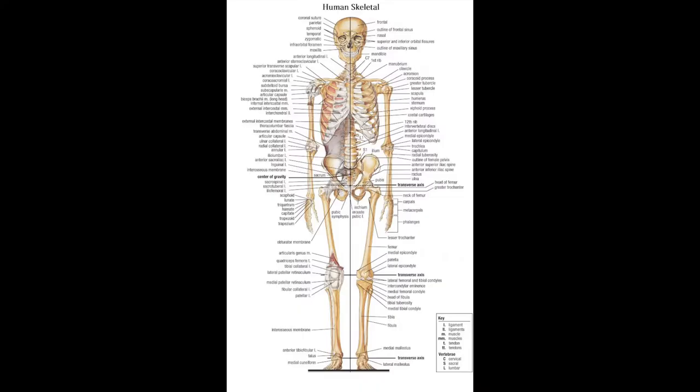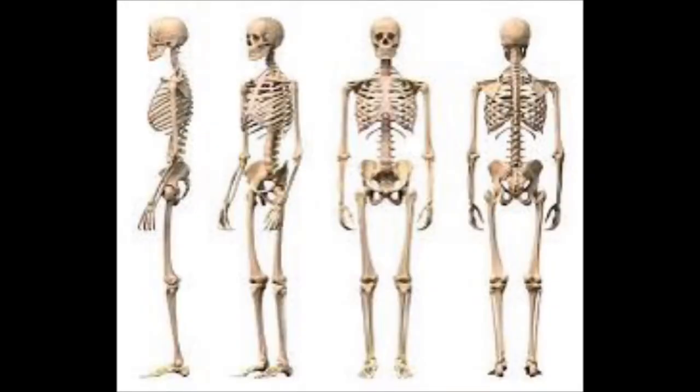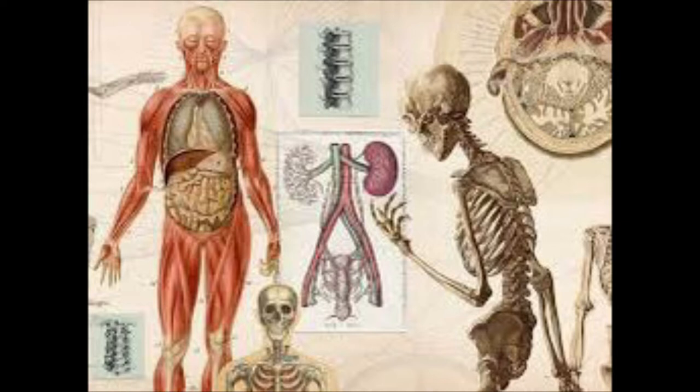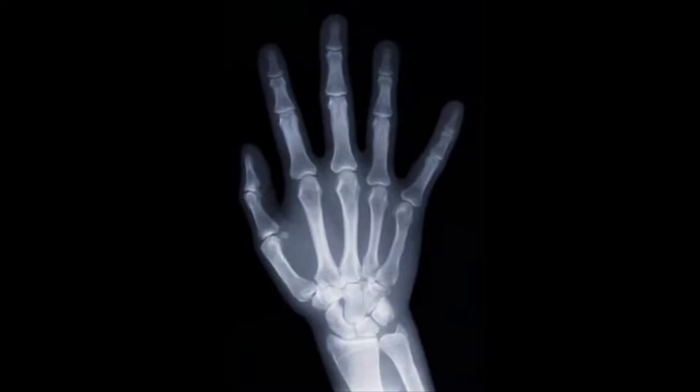There are 206 bones in the human body and in this video I shall be attempting to name all of them. These bones are part of the human endoskeleton which forms what is known as the skeletal system providing five main functions.